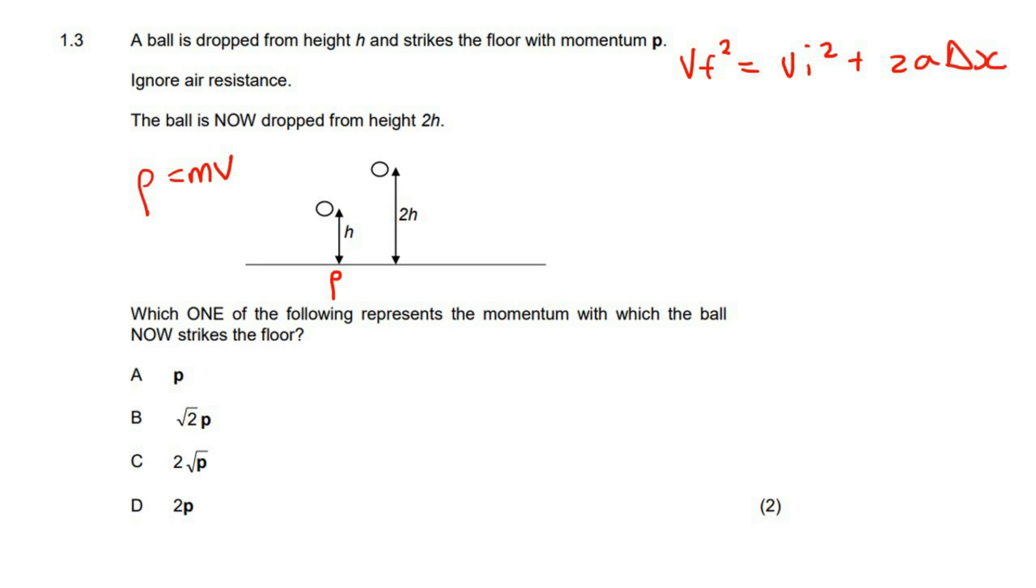Now we know that in both scenarios the ball is dropped, so I'm going to make the initial velocity zero. So we're just going to end up with 2a delta x. If you get final velocity alone, we can see that final velocity has a square root when it comes to distance.